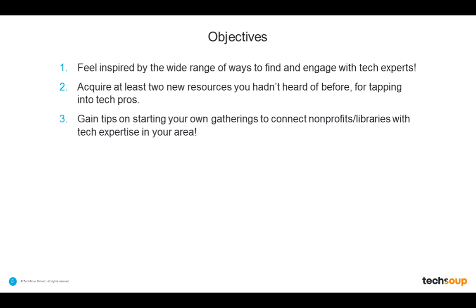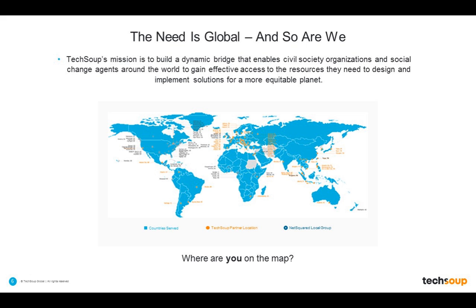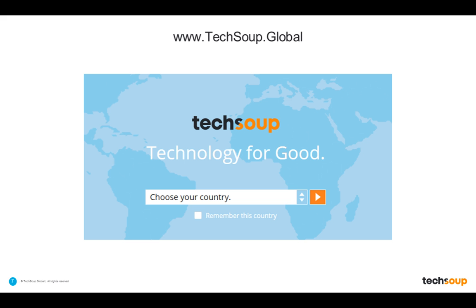Before we dive into the full topic, for those who may not be familiar with TechSoup, we are present in 236 countries around the world. We will talk about some donation programs and discount programs later that are primarily geared toward TechSoup.org for U.S.-based organizations, but many other programs we'll discuss could apply no matter where you are. If you're joining from outside the United States, I would recommend visiting TechSoup.global and choosing your country from the drop-down to find your local or regional partner.